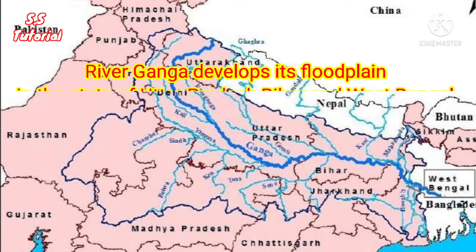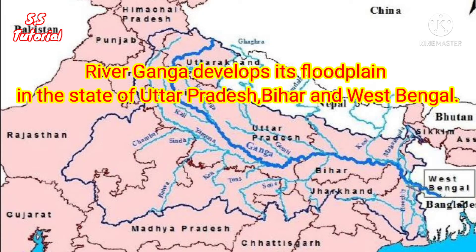As an example we can say about the Ganga River. River Ganga developed its flood plain in the states of Uttar Pradesh, Bihar and West Bengal.